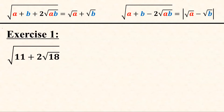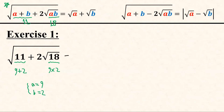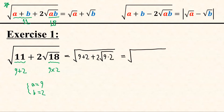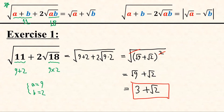Our first exercise is denesting square root of (11 plus 2 times square root of 18). Comparing with our formula, we must find two numbers a and b whose sum is 11 and whose product is 18. Note that 9 plus 2 equals 11 and 9 times 2 equals 18. So a equals 9 and b equals 2, which means this equals (square root of 9 plus square root of 2) squared. Removing the square root sign, we get square root of 9 plus square root of 2, which is simply 3 plus square root of 2.